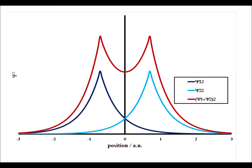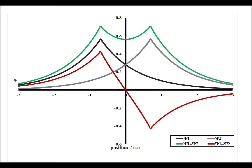Here we have the atomic 1s hydrogen orbitals centered at minus 0.6 and plus 0.6 — that's where the nuclei are. We see in red the sigma bonding combination of those two hydrogen 1s atomic orbitals. We also have shown in red the antibonding combination for the two nuclei centered at minus 0.6 and plus 0.6.